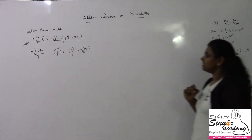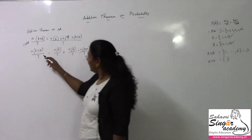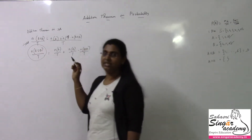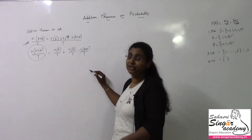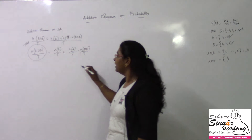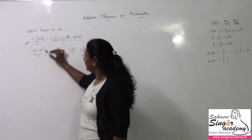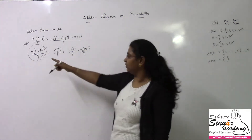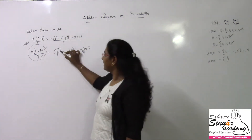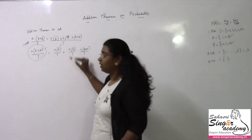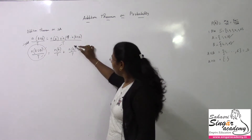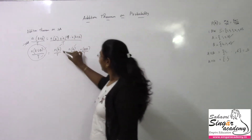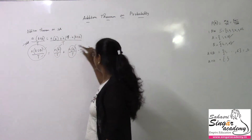n divided by total satisfies the definition of probability, which is favorable in the numerator divided by total. Favorable is A or B in this case — the whole of A, the whole of B, and A and B together. So all probability definitions are satisfied.